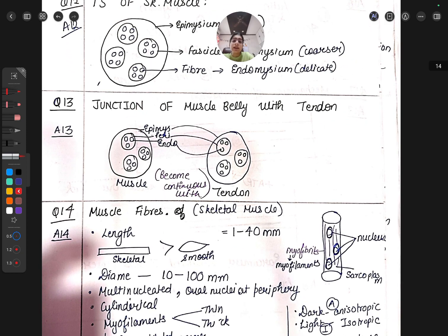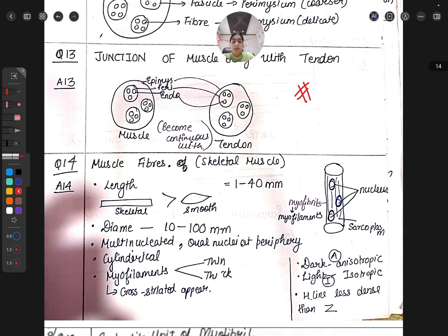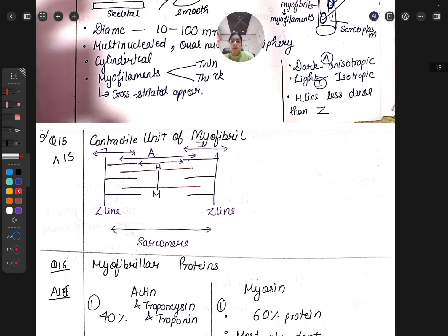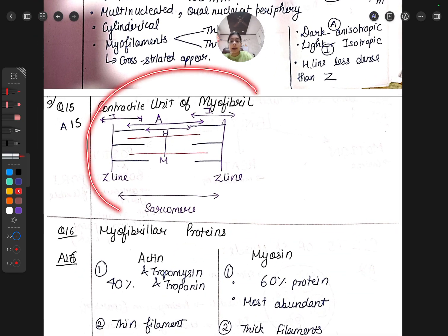The structure of skeletal muscle includes epimysium, fascicles with perimysium, and fibers with endomysium - this is covered in NEET. The junction of muscle belly with tendon is called the myotendinous junction. You can draw this diagram.